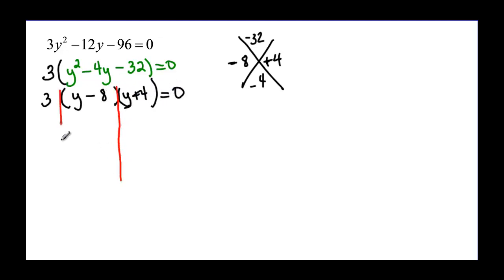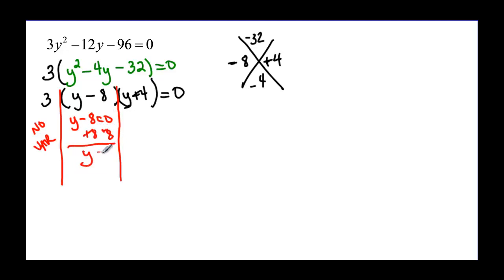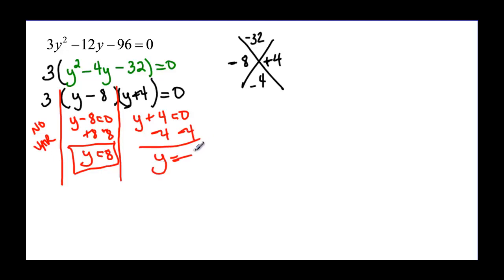Setting our factors equal to zero: there's no variable in the 3, so we don't worry about it, but when we have a variable we solve for it. y minus 8 equals zero — add 8 to both sides — y equals 8. Then y plus 4 equals zero — subtract 4 from both sides — y equals negative 4.